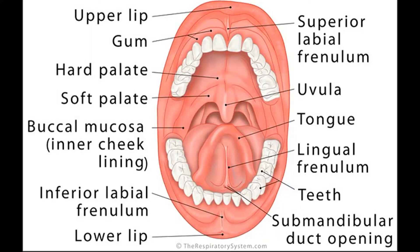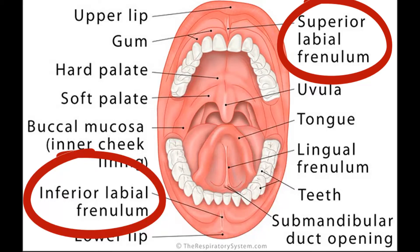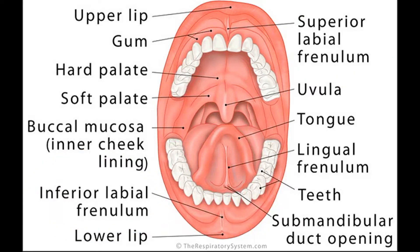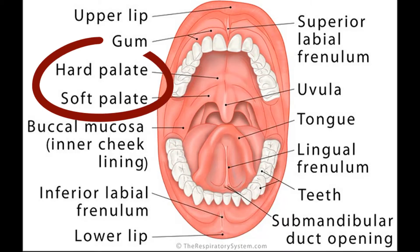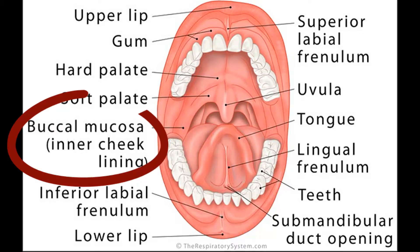You need to remember a few structures. You've got the superior and the inferior labial frenulum right in the center. In the palate you've got the hard palate and the soft palate with the uvula. On the sides you've got the buccal mucosa.